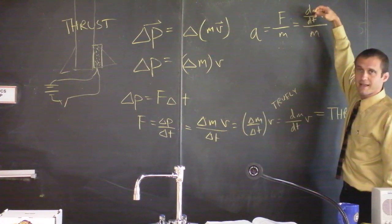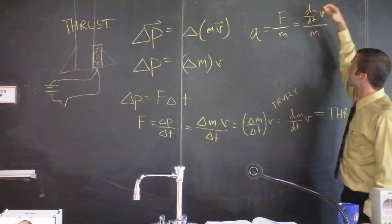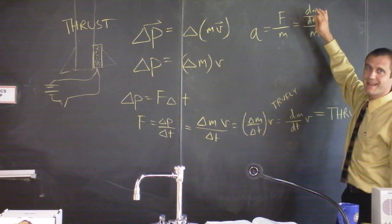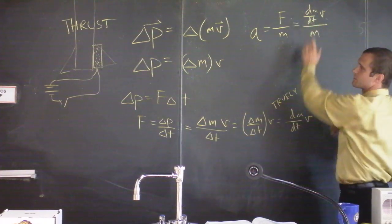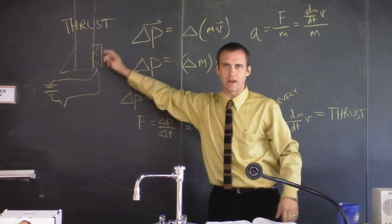if the mass is decreasing, then the acceleration will be getting, the acceleration will be strong, right? Because of the fact that the mass is spinning out of this rocket at a steady rate.